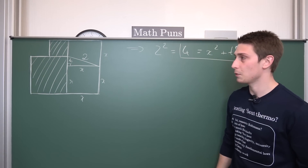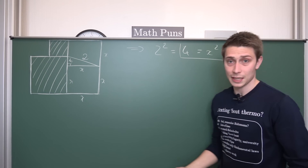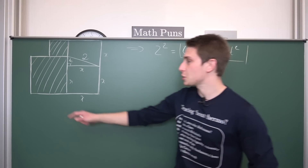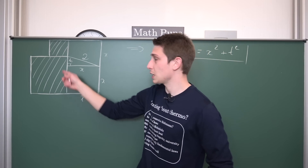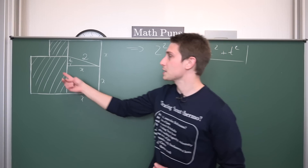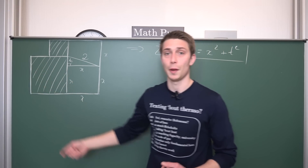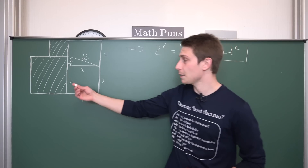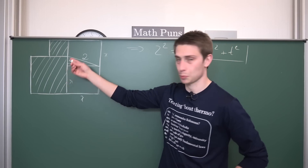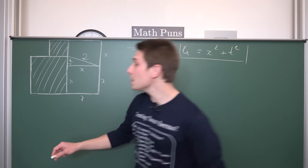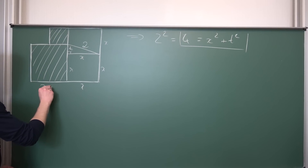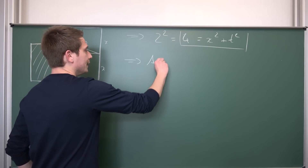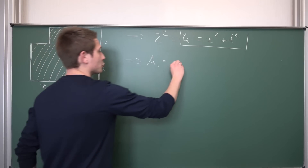Now we can go ahead and start computing our areas, because areas of squares are very easy to compute — it's just a side length times itself. The side length of the bigger square is x plus t, and the same thing on the other side is also x plus t. This leaves us with area 1 being equal to (x + t) squared.